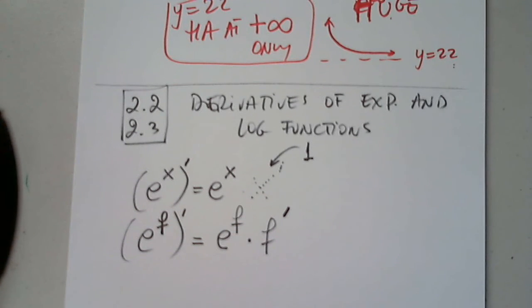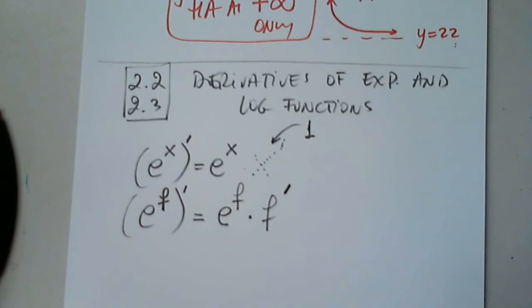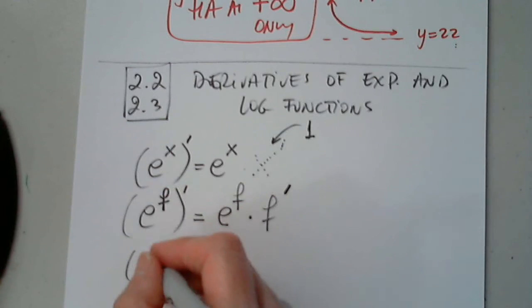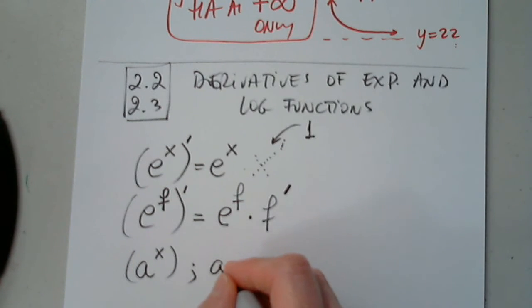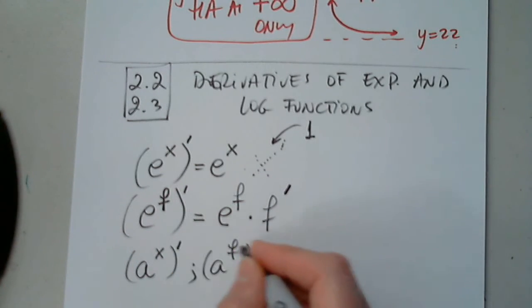This book, for some reason, does not use any other log, any other base. I would normally, what I do with my calculus class, I always present also a to x, any base, not e, and also a to a function, of course, prime. But they do not appear in your book, so I'm not going to overwhelm you with that. That's the entire section 2.2. I don't have anything else. We just have to practice.